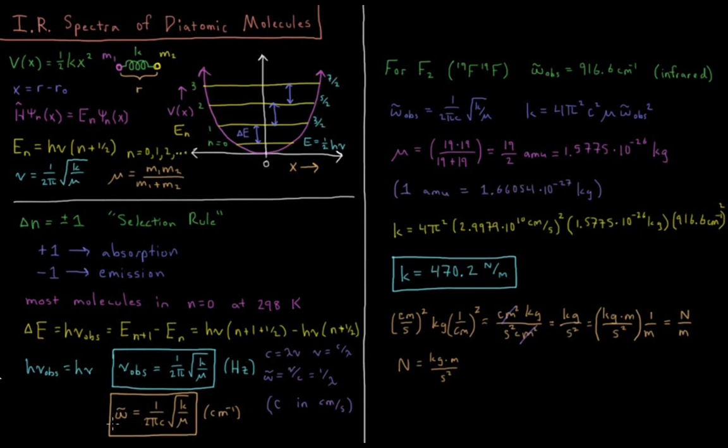The only difference between nu and omega bar is now we throw in an additional division by the speed of light, omega bar equals one over two pi c times the square root of k over mu.